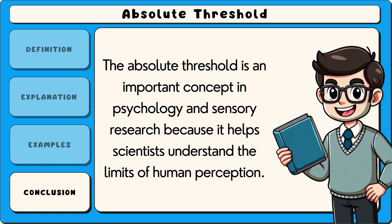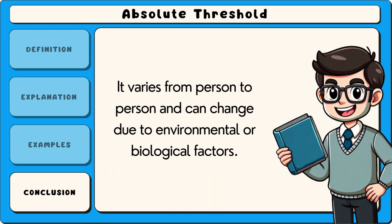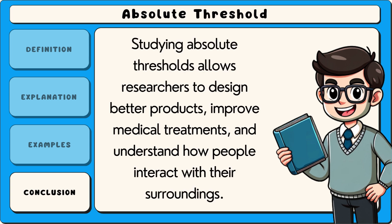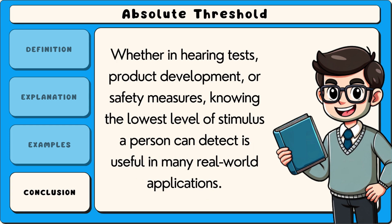The absolute threshold is an important concept in psychology and sensory research because it helps scientists understand the limits of human perception. It varies from person to person and can change due to environmental or biological factors. Studying absolute thresholds allows researchers to design better products, improve medical treatments, and understand how people interact with their surroundings. Whether in hearing tests, product development, or safety measures, knowing the lowest level of stimulus a person can detect is useful in many real-world applications.